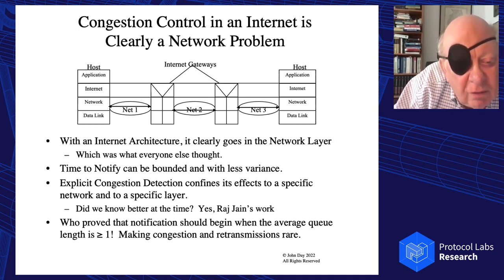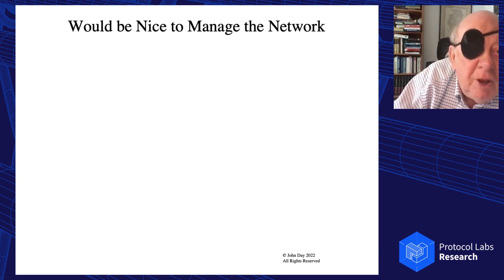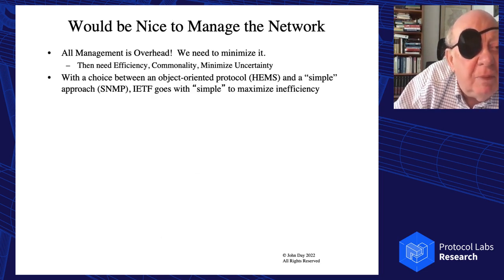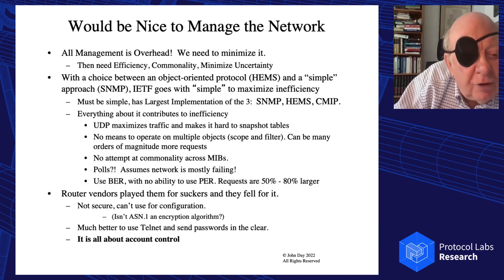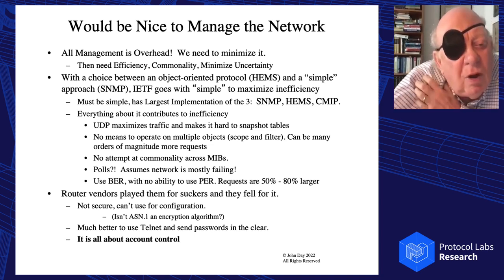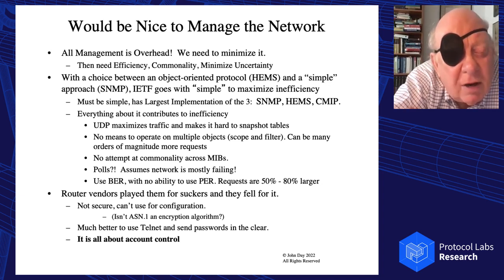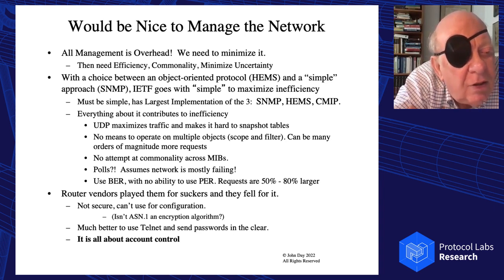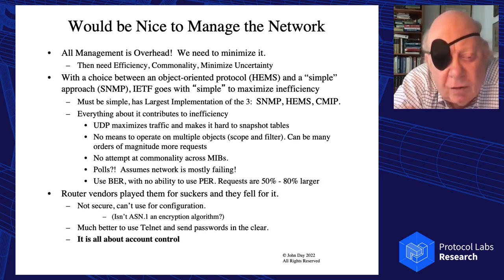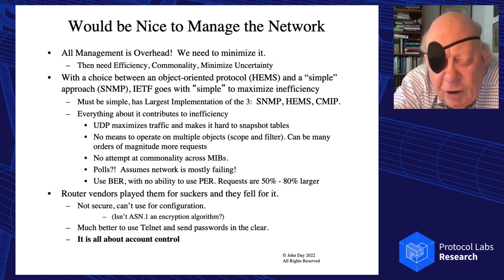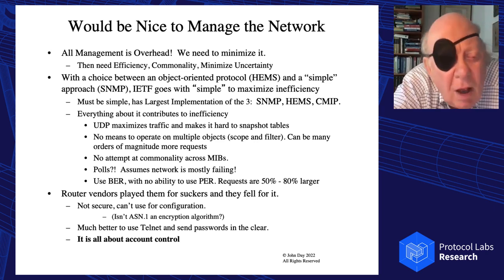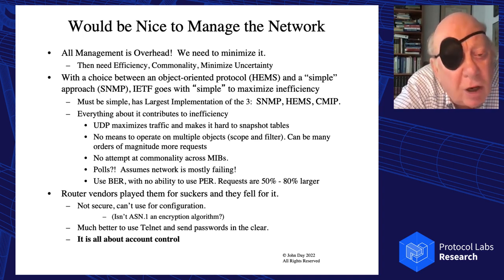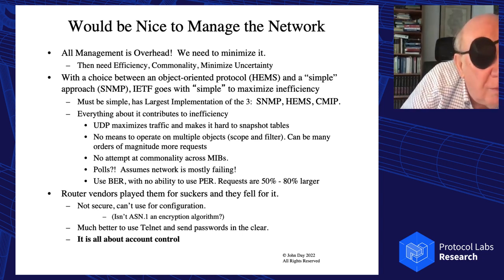They also did a bang-up job with SNMP — actually, SNMP was probably the worst protocol they could have done. They'd already tried it in 1984 and realized it had too much overhead, so they'd moved to a more object-oriented approach with both CMIP and HEMS. When SNMP came out, the router vendors said it would be okay for monitoring but not for configuration because it's not secure. Their solution was to open a Telnet connection and send passwords in the clear — clearly much more secure.